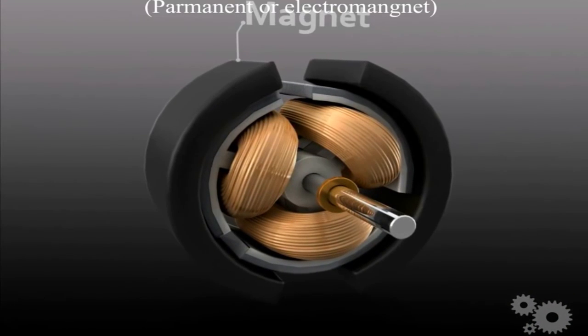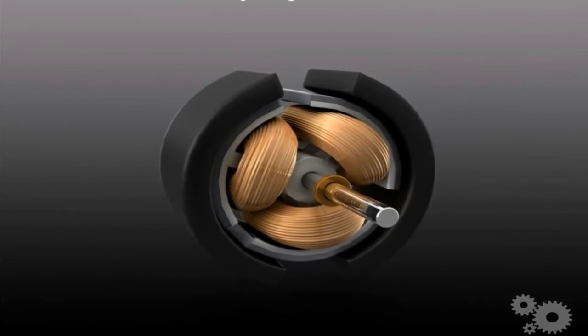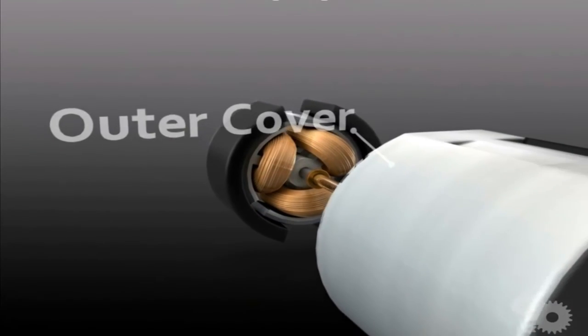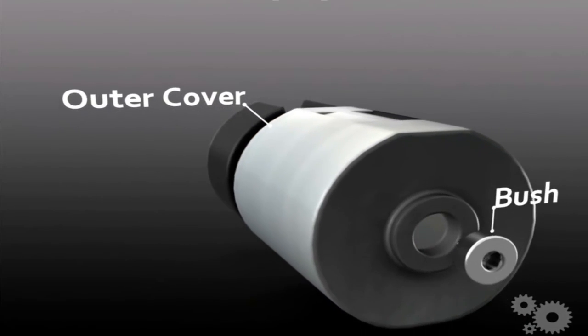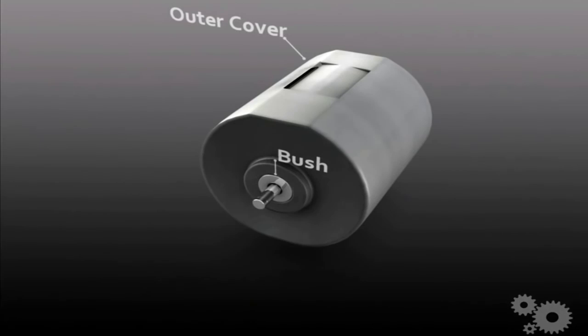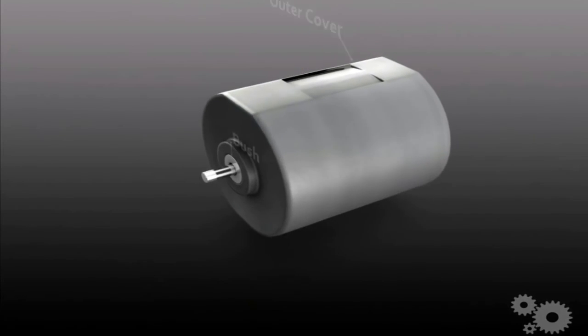This whole assembly is placed in outer cover. Outer covers are made up of plastic for small motors. For high rating motors it is made up of steel or cast iron.